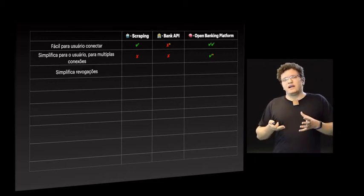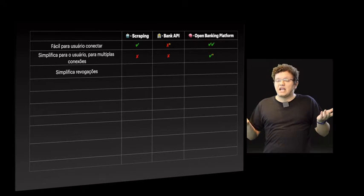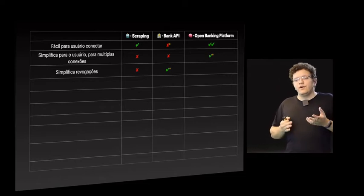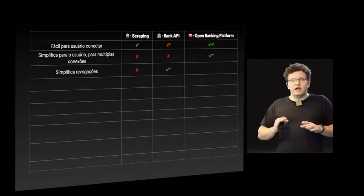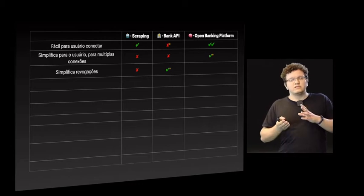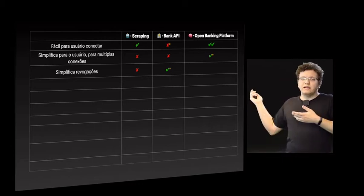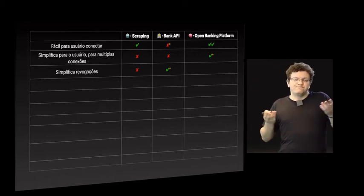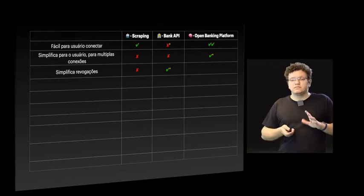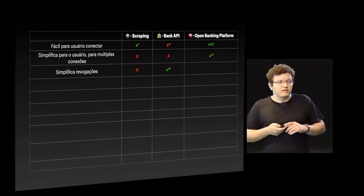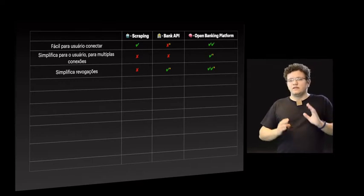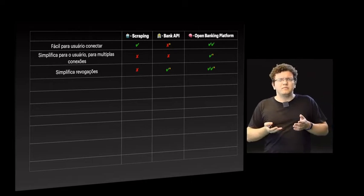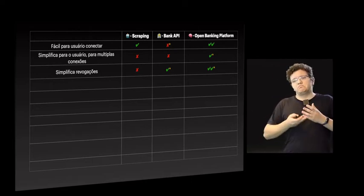A revogação é simplificada? No scraping, você tem que trocar a senha — complicado. Na API de Open Banking, é simples: tem o painel de revogação dentro da aplicação do banco, mas com asterisco — se você tem várias contas, vai ter que fazer a revogação uma a uma. Na plataforma, definitivamente mais fácil: um painel que revoga tudo, com asterisco porque depende da implementação.